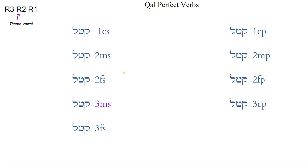We are looking at Qal perfect verbs and how to form them. With any of the verb stems, we want to begin with the 3MS perfect form. In the Qal perfect, the 3MS is formed with a qamets under the first root letter and a patah under the second root letter — so katal. Notice that we have the three root letters: R1, R2, R3. The vowel under the second root letter is called the theme vowel. The vowel under the second root letter here, the tav, is a patah. So we have a patah as our theme vowel for the Qal perfect form. 3MS is katal.